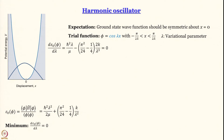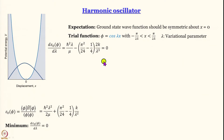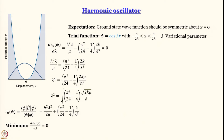To find the minimum, we differentiate with respect to lambda and equate to zero. The derivative gives: ℏ²λ/μ minus 2 · (π²/24 - 1/4) · k/λ³ = 0. Working it out gives an expression for lambda². I am not going through every step — it is very possible I have made some mistake while writing these equations; please work it out yourself and refer to Macquarie's book if needed.